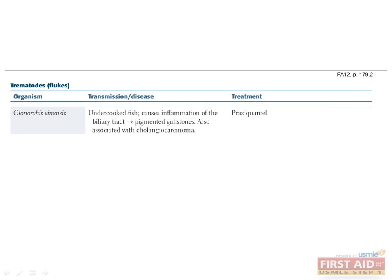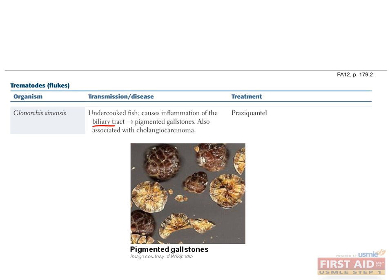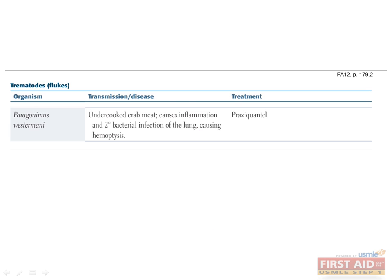Clonorchis sinensis is endemic to Southeast Asia. Larvae are ingested in raw or undercooked freshwater fish. The larvae migrate through the GI tract and mature in the biliary tree — a helpful mnemonic is that Clonorchis climbs the biliary tree. Inflammation of the biliary system can lead to pigmented gallstones, and there is also an association between Clonorchis and cholangiocarcinoma. Remember the buzzword associations: biliary disease, cholangiocarcinoma, and Clonorchis.